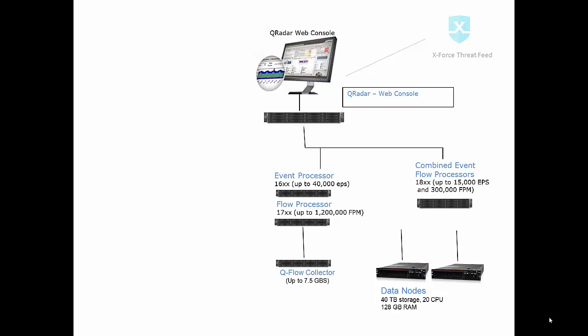After QFlow, I want to take a minute to talk about data nodes. We're talking about some very large storage volumes in certain customer environments. I have some clients that will require more than the native 40 terabytes of space in each of the event and flow processors. So onto the back of these, I can add a data node — it's an additional 40 terabytes of space and I can add multiples of them. In the most extreme cases, I can add a quarter of a petabyte of storage to each event or flow processor.